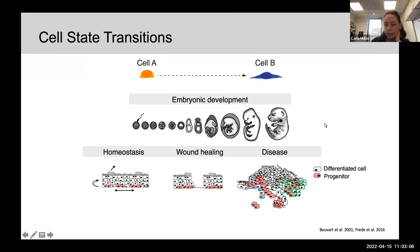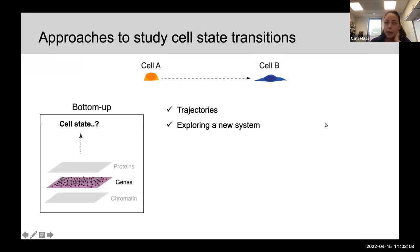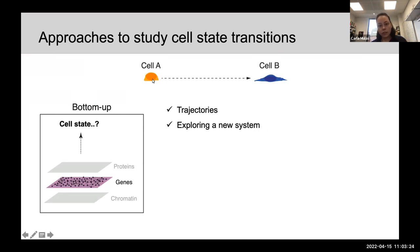If we think about approaches typically used to study these transitions, some might be considered bottom-up approaches, in which we start by characterizing all the components of a cell and how they change over a given window of time. From that, we try to infer cell states. These approaches are great for trajectories — understanding the path a cell might follow — and they're great for exploring new systems for which we know very little about the underlying biology.